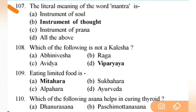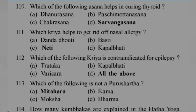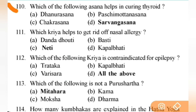The literal meaning of the word Mantra is — right answer is B — instrument of thought. Next: eating limited food is Mitahara. Next: which of the following asana helps in curing thyroid disorders? Right answer is D — Sarvangasana. Next: which kriya helps to activate natural energy?